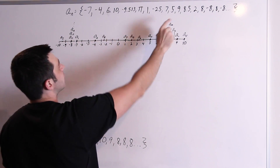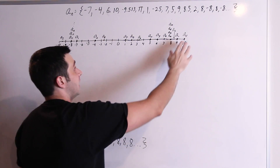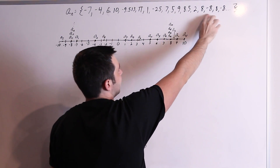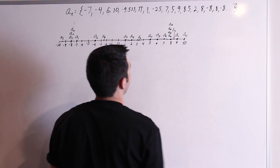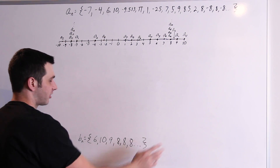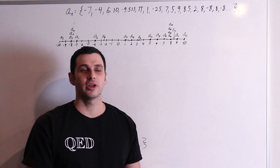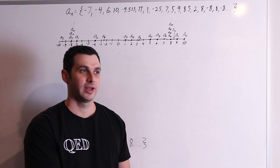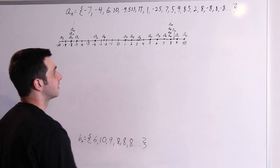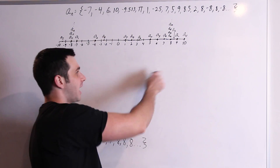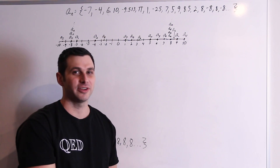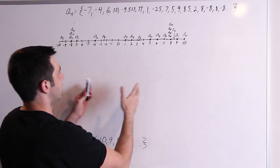Now notice that our original sequence does not converge. 8, negative 8, 8, negative 8 forever — it does not approach any number. However, our subsequence does converge. It's 8, 8, 8 forever. In real analysis, you learn rigorously what it means for a sequence to converge. But just realize if you have the same number forever, that the sequence converges to that. This will be more of a high-level proof — I'm not going to be writing it out or doing any of the rigorous stuff from real analysis. But it's still good enough to show you what a proof looks like.